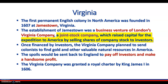Virginia. The first permanent English colony in North America was founded in Jamestown in 1607. The establishment of Jamestown was a business venture of London's Virginia Company — a joint stock company which raised capital for the expedition to America by selling shares of the company to investors. Once financed by investors, the Virginia Company planned to send colonists to find gold and other valuable natural resources in America. The spoils would be sent back to England to pay off investors and make a handsome profit. The Virginia Company was granted a royal charter by King James I in 1606.